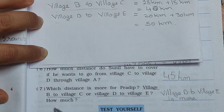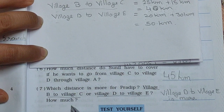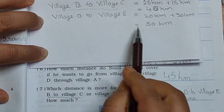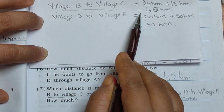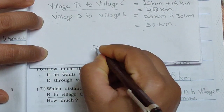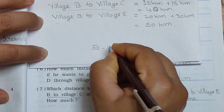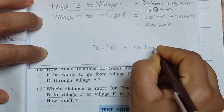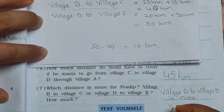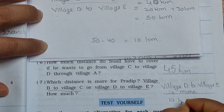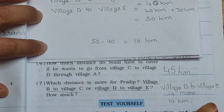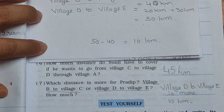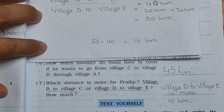Another part of the question: how much more? 50 minus 40 equals 10 km more. So your answer — village D to E is 10 km more. Okay, so here your main question number 21 is over.